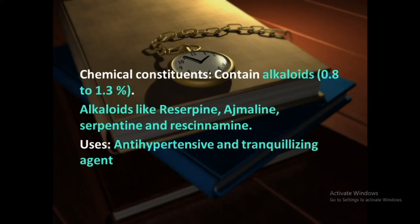Now see the chemical constituents. Rauwolfia roots and rhizomes contain alkaloids as a major chemical constituent — 0.8 to 1.3 percent of alkaloids. The alkaloids include reserpine, ajmaline, serpentine and raubasine. Out of these four alkaloids, reserpine is the major alkaloid contained in Rauwolfia.